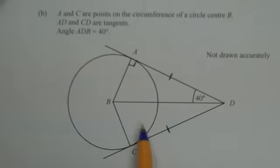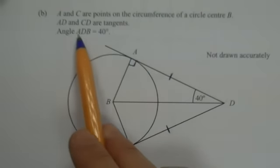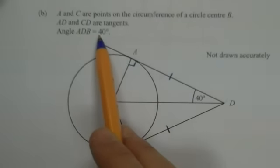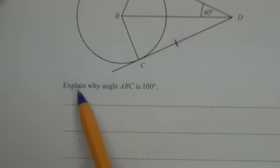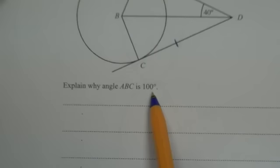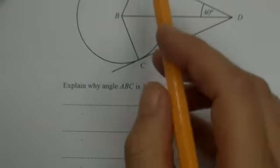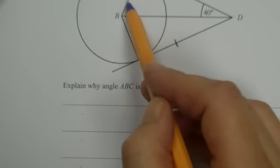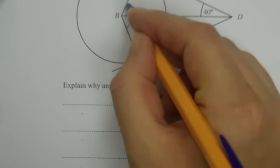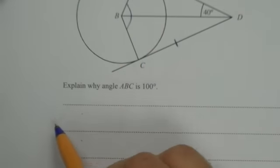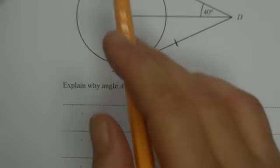Now we are being asked, it says here, angle ADB is 40 degrees. A, D, B, 40 degrees. And in the question it says, explain why angle ABC is 100 degrees. Okay, angle ABC is this angle here. A, B, C, so it's all of that. And we need to explain why this is 100 degrees. So let's take a look.